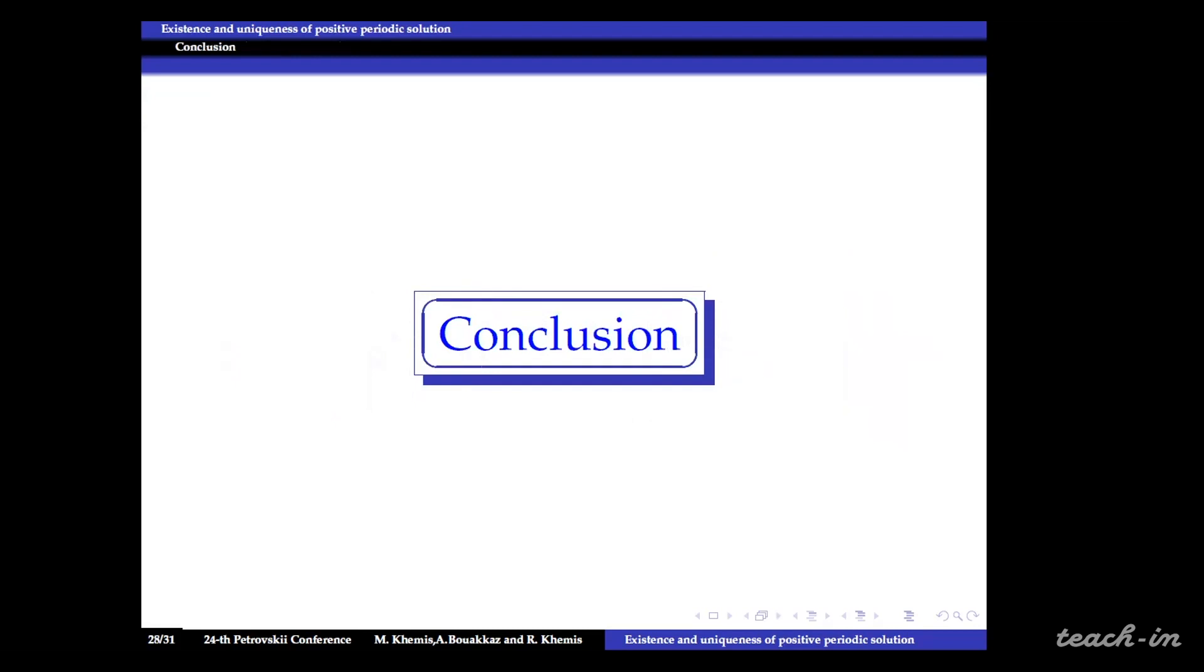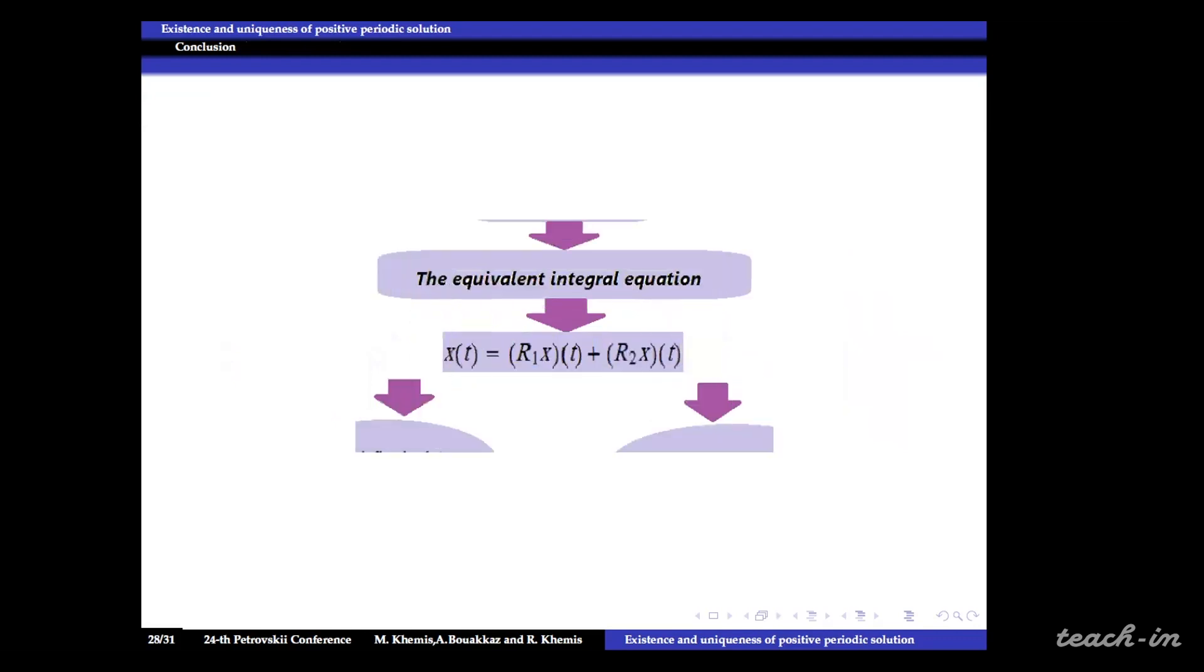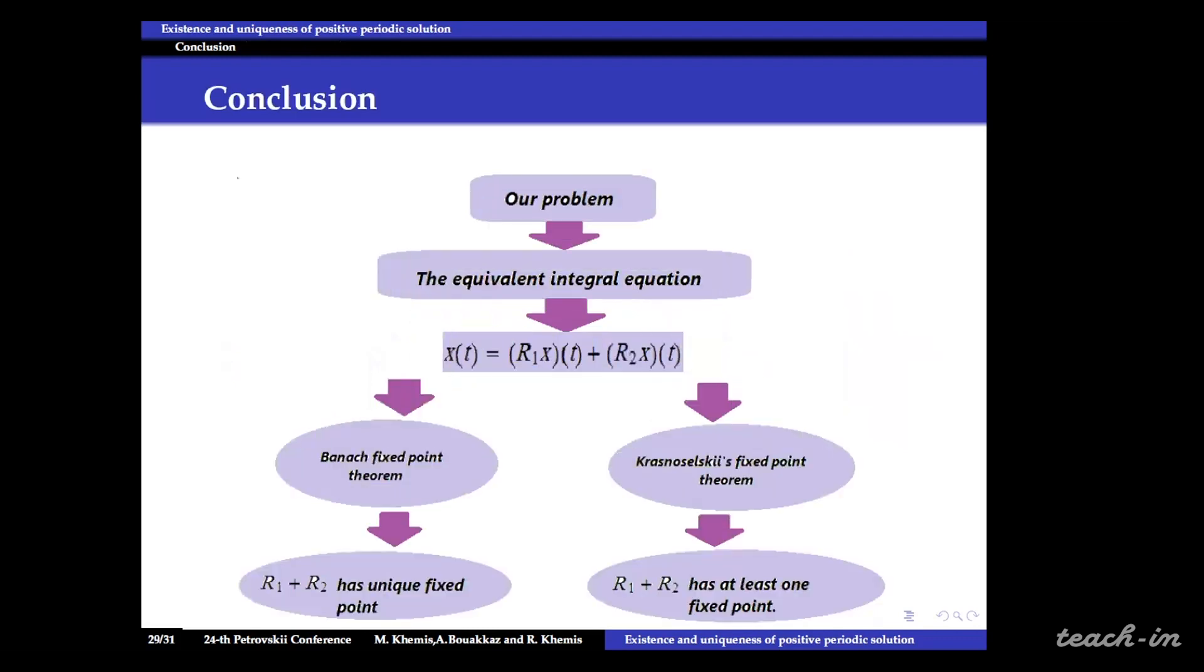So as I said at the beginning, our key task in this work is to prove existence and uniqueness of a positive periodic solution for our hematopoiesis model by using an efficient technique based on Krasnowski's fixed point theorem as well as Green's function method.